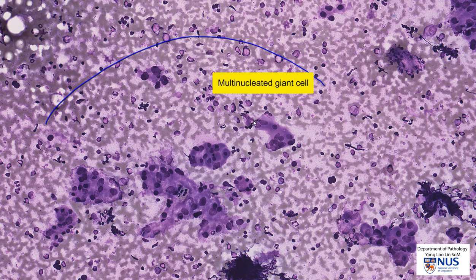Occasionally, multinucleated giant cells can also be seen in Hashimoto thyroiditis. They are not a specific feature, but usually these cells are smaller and contain fewer nuclei than those seen in subacute thyroiditis.